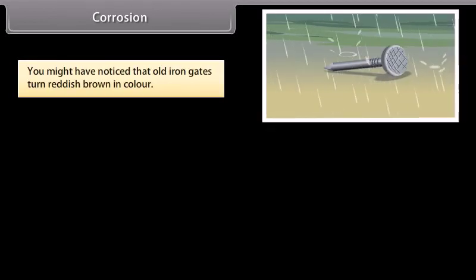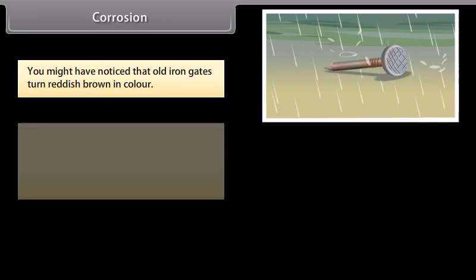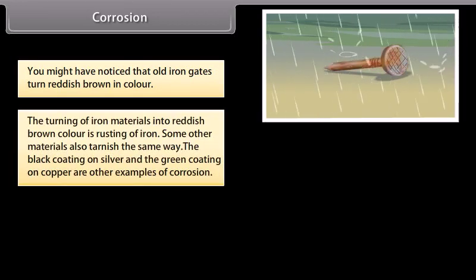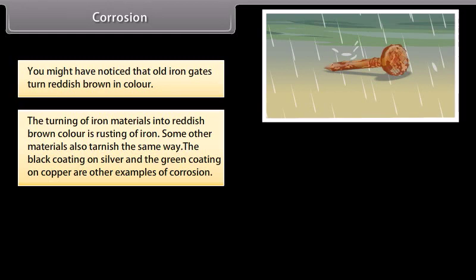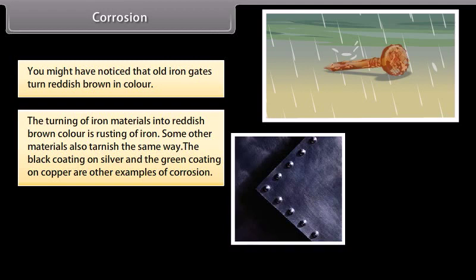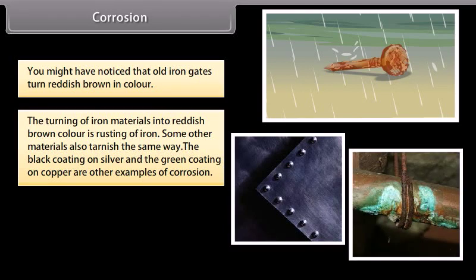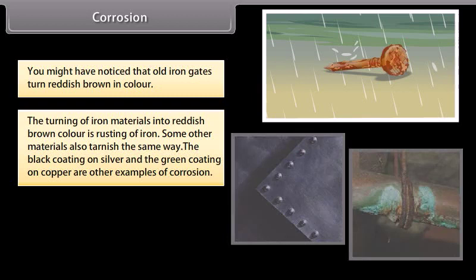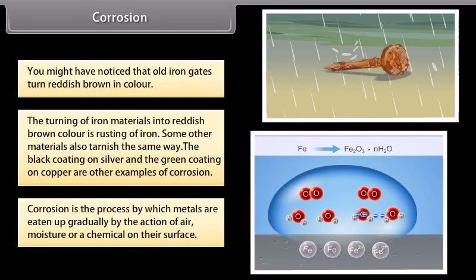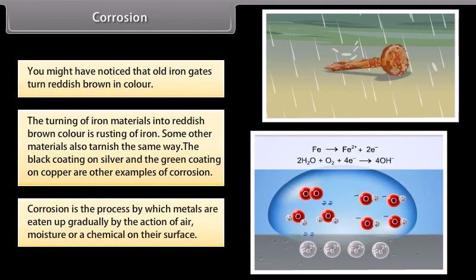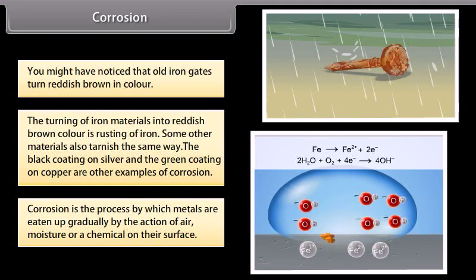You might have noticed that old iron gates turn reddish brown in color. The turning of iron materials into reddish brown color is rusting of iron. Some other materials also tarnish the same way. The black coating on silver and the green coating on copper are other examples of corrosion. Corrosion is the process by which metals are eaten up gradually by the action of air, moisture, or a chemical on their surface.